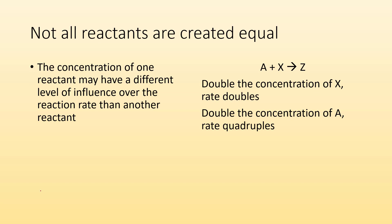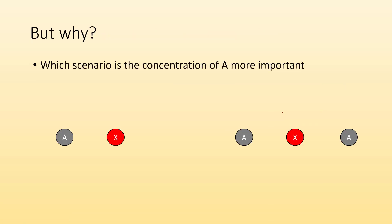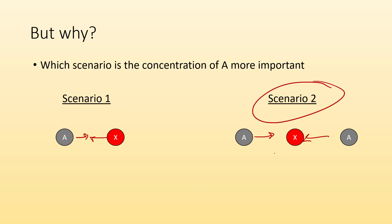Not all reactants are created equal. The concentration of one reactant may have a different level of influence over the reaction rate than another reactant. So in this example, A plus X gives me Z. We may double the concentration of X and the rate doubles, but we may double the concentration of A and the rate quadruples. They don't have the same influence on the reaction rate because it has to do with the mechanism. So which scenario is the concentration of A more important — scenario one where A and X have to collide, or scenario two where two A's have to collide with an X? It's definitely scenario two because we need more A in this mechanism. The mechanism determines the importance of each reactant.